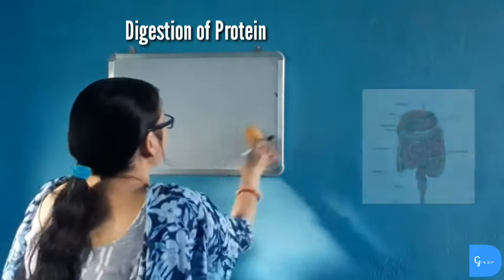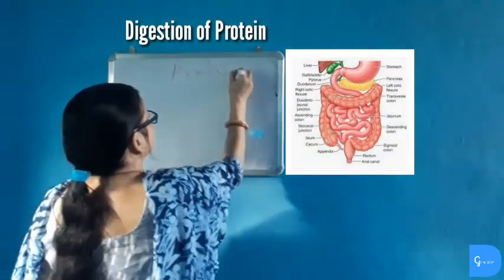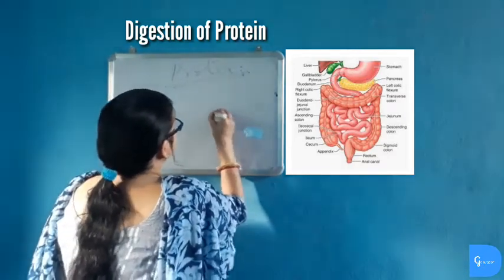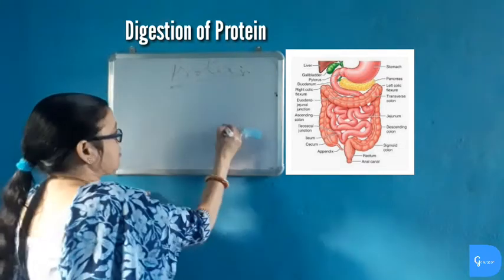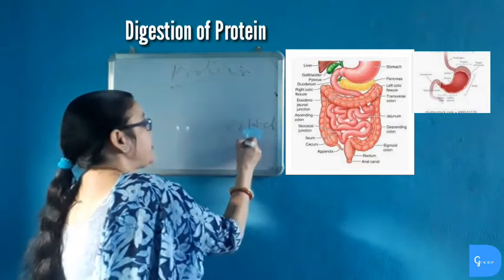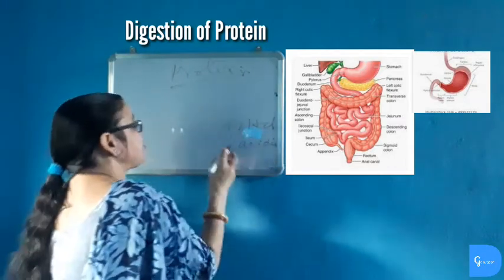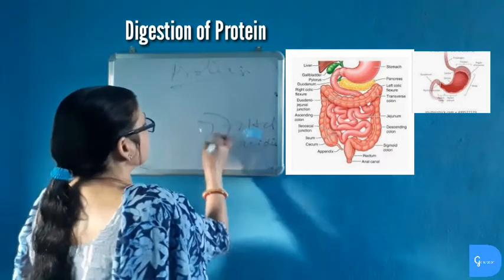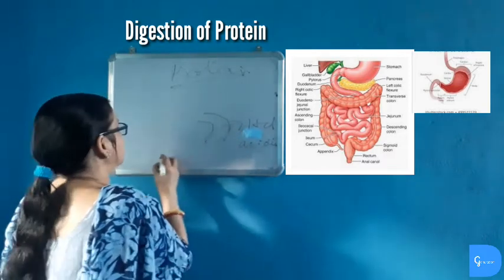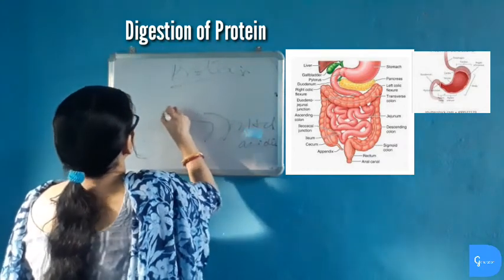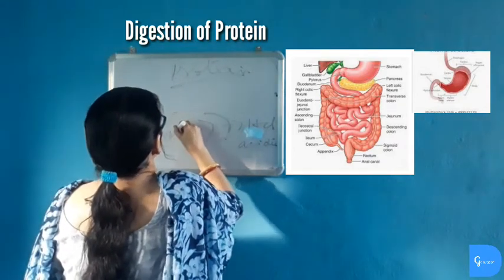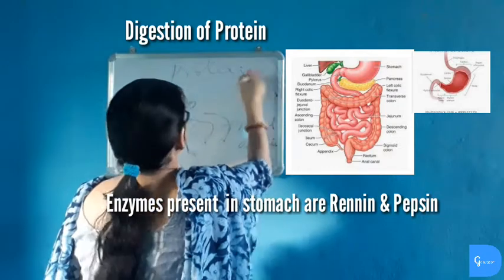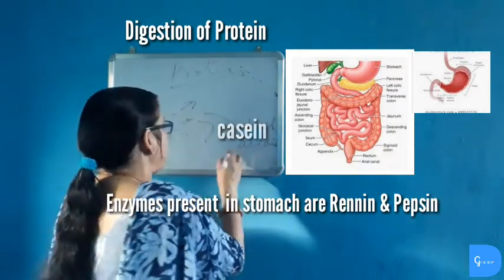Now, digestion of protein. Protein digestion does not take place in the mouth or in the esophagus. When the protein food reaches the stomach, the stomach secretes hydrochloric acid making the food acidic. The enzymes in the gastric juice then react on the food. The enzymes present in gastric juice are rennin and pepsin. Rennin acts only on milk protein called casein, and pepsin acts on protein and breaks it into simpler forms.